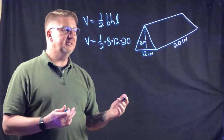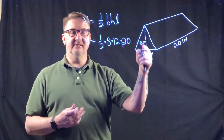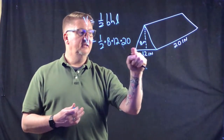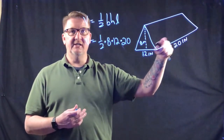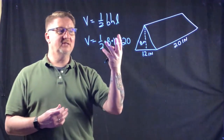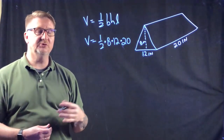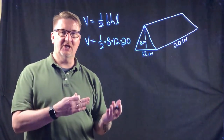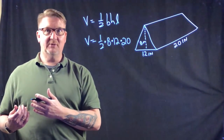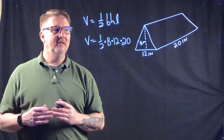Just to be clear where those numbers come from: 8 is the height, 12 is the base, and 20 is the length. The order doesn't matter because multiplication is commutative — changing the order of multiplication does not affect the answer.